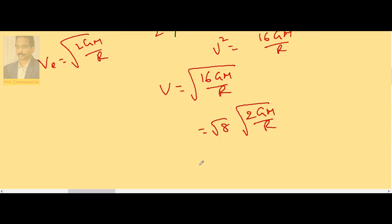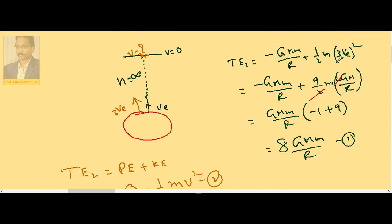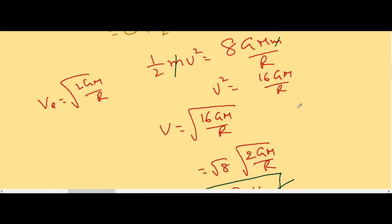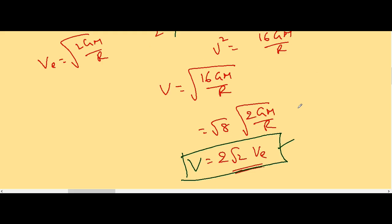√8 is 2√2, so this becomes 2√2 × v_e. So at the infinity point, the velocity of the body is 2√2 times the escape velocity. If it is projected vertically with velocity 3 times the escape velocity, when it reaches the infinity point, its velocity will be 2√2 v_e.